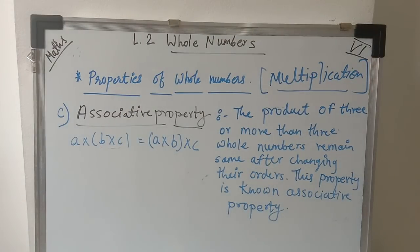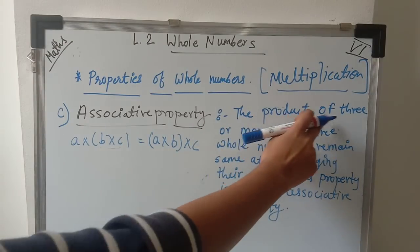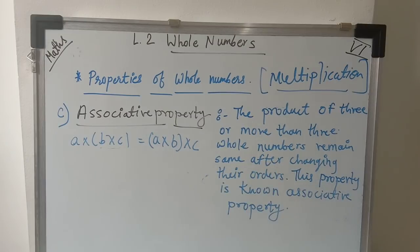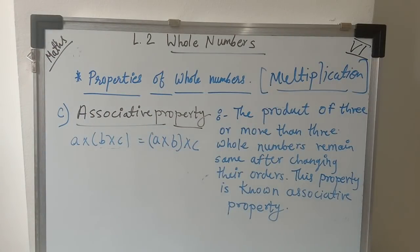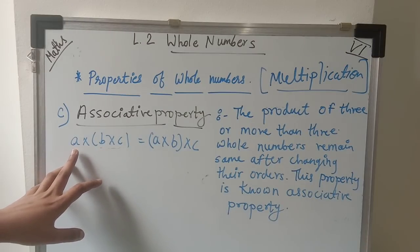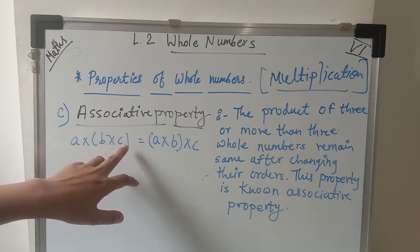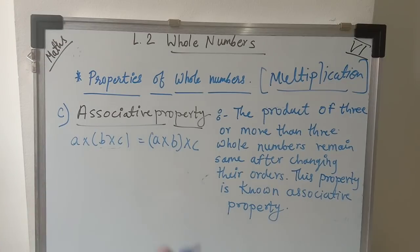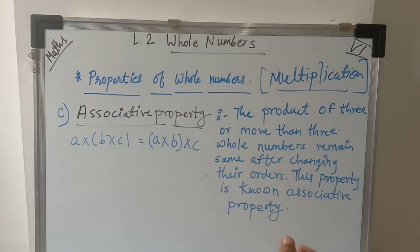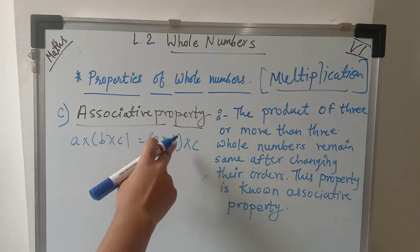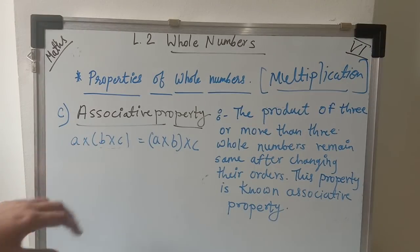Our third property is the associative property. It states that the product of three or more whole numbers remains the same after changing their order. If we consider a, b, and c as three whole numbers, multiplying them in one order and then changing their order will give us the same answer.